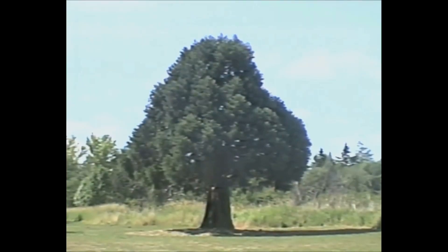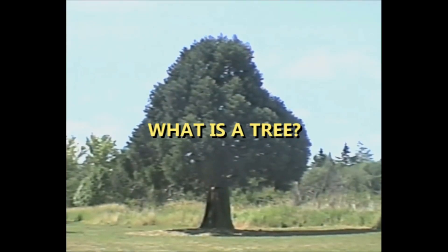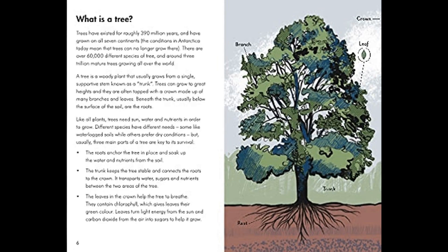We can start by asking a simple question: What is a tree? That question at least is settled. A tree is a woody plant characterized by a single dominant stem called a trunk.